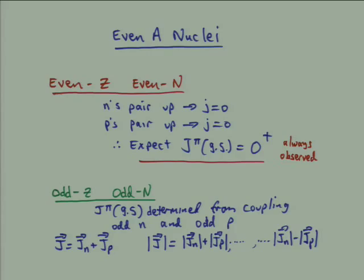We've been talking about nuclear structure. Up until now we were talking mainly about odd-A nuclei, relying on the idea that we could attribute the ground state spin and parity and the spin and parity of at least the first few low-lying excited states of those nuclei as being due to the single unpaired nucleon. We also saw where there were shortcomings, including the fact that nuclei are not necessarily all spherical.